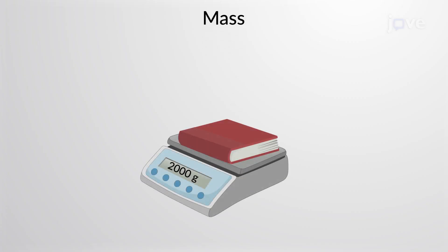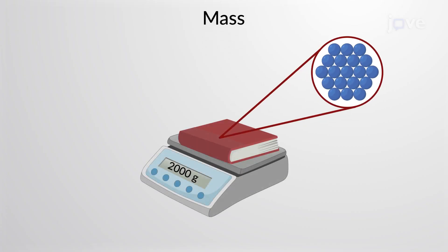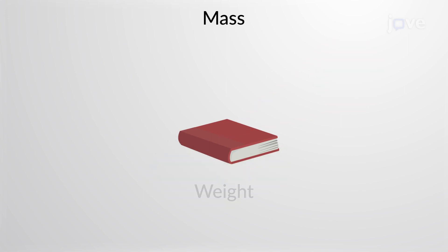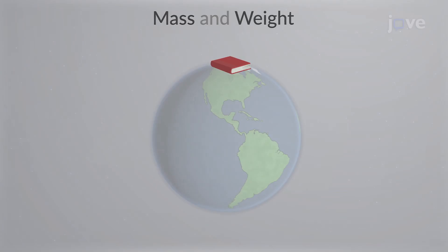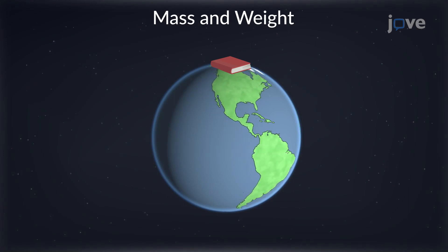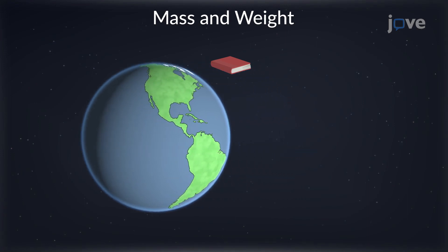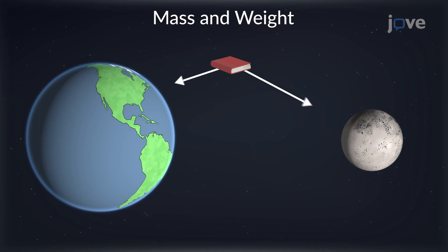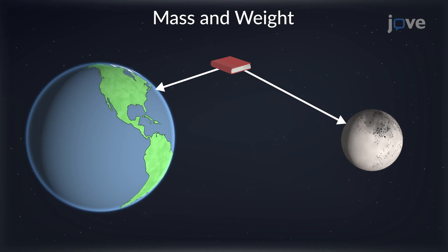The mass of an object is a measure of the amount of matter it contains, and depends on the number of atoms in it. Its weight is the gravitational force acting on it from a larger object, like the Earth or the Moon, whichever is nearest to it.